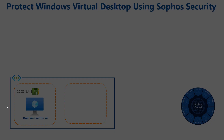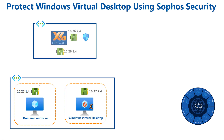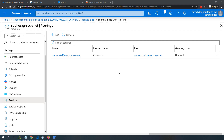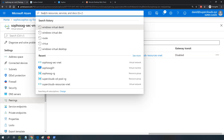Once peering is completed, the next step is to create a route table. The route table will have an entry to send all traffic to the firewall's internal interface at 10.26.1.4. I'll configure a route to send all traffic to that interface and then associate this route table with the Windows Virtual Desktop subnet. The peering relationship is confirmed as connected.